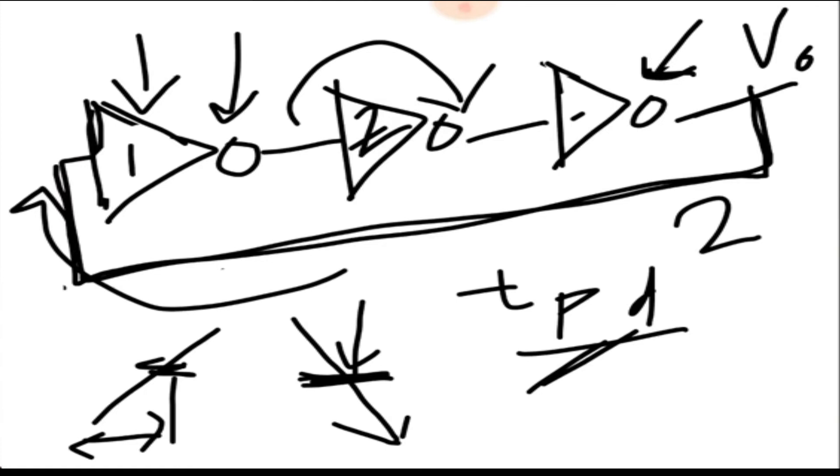Assuming the characteristics of all these are the same, the propagation delay is three times. When that happens, the output goes from low to high, the input is high here, so output is low here, input is low here, so output is high here.